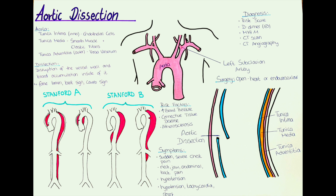How can we treat an aortic dissection? For both types it is really important to control the blood pressure, usually done with beta blockers. Also in both cases patients usually receive pain relievers. Specific for a type A aortic dissection is that in acute cases we have to perform emergency surgery. We divide the surgical approach into either open heart surgery or the less invasive endovascular surgery.